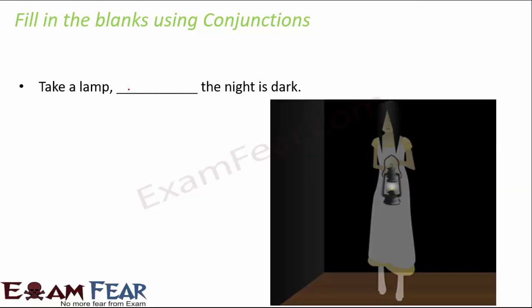'Take a lamp ___ the night is dark.' We are suggesting you take a lamp because the night is dark, so you can put 'as.' 'As' shows a reason in this case. This is also an example of a subordinating conjunction. Whenever we use 'as' or 'because' to express reasons, they are examples of subordinating conjunctions.